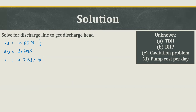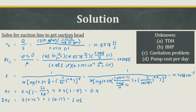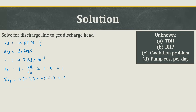For the discharge line, instead of contraction we have expansion, with Ke equal to (1 minus discharge pipe area over tank area). Approximating the tank cross-section as very large, Ke equals 1. For the fittings and valves, we have 5×0.75 for five 90-degree elbows plus 2×0.17 for two wide open gate valves, giving a total ΣKf of 4.09.